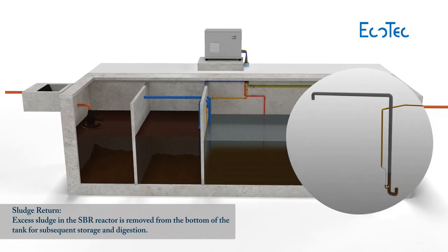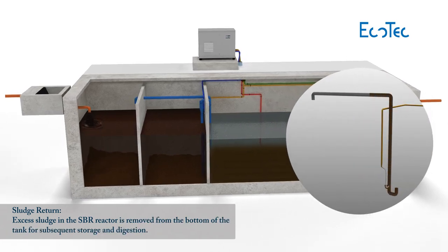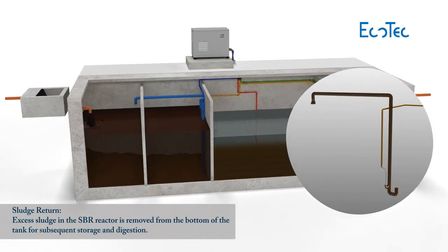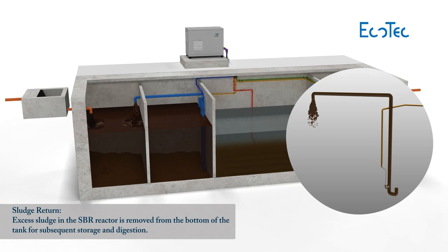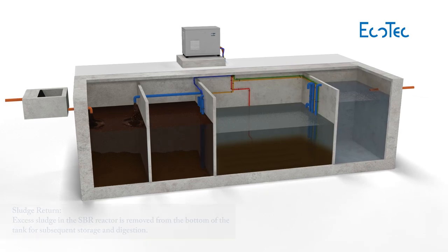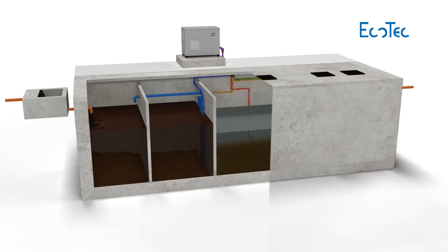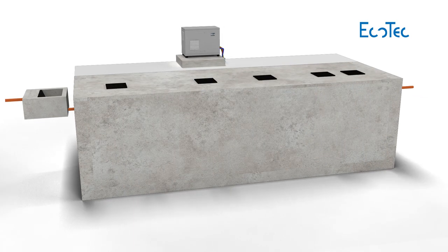Excess sludge from the reactor is pumped back to the collection tank for subsequent storage. The Ecotech EcoSBR plant is now ready for the next treatment cycle.